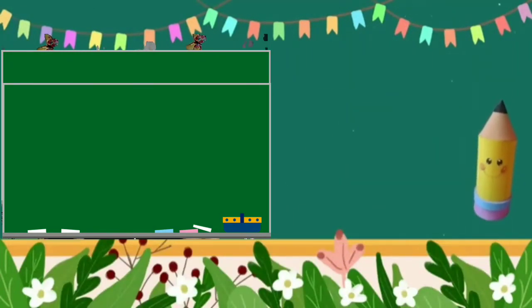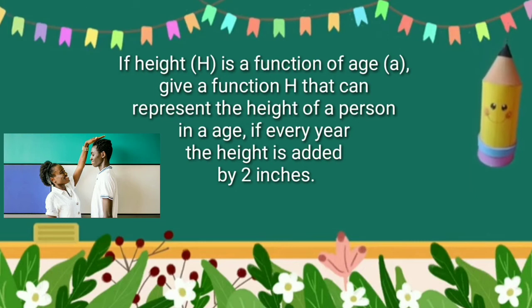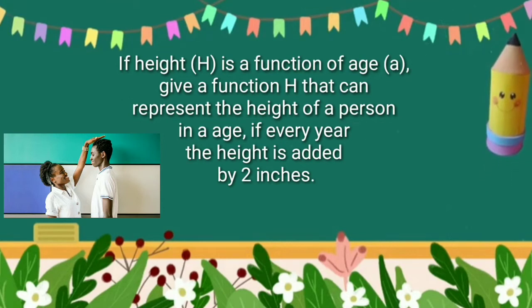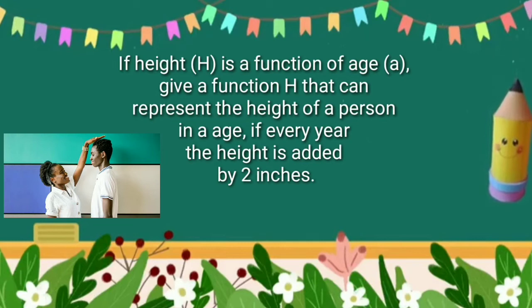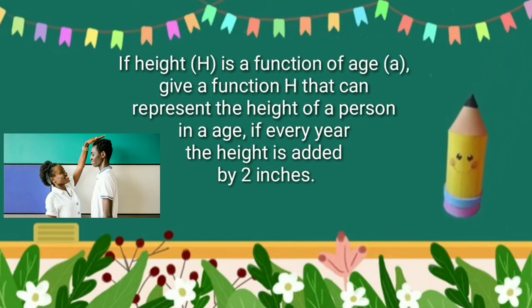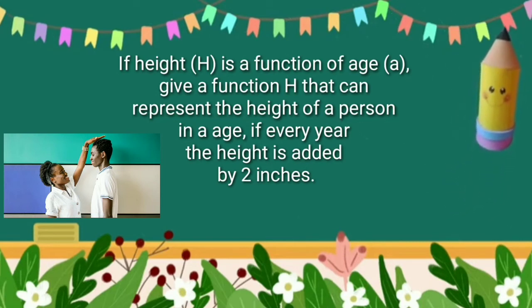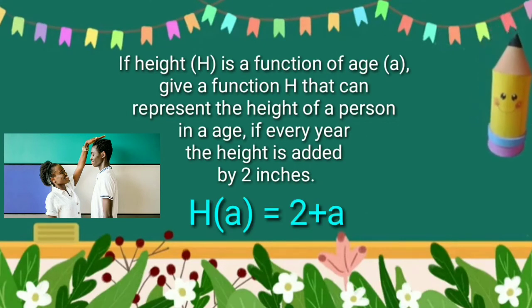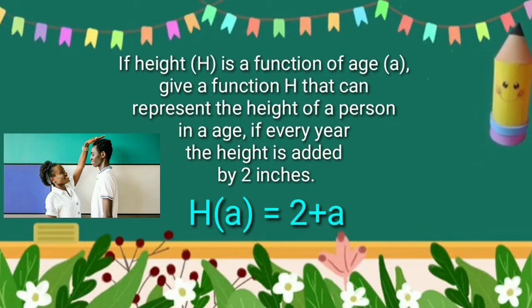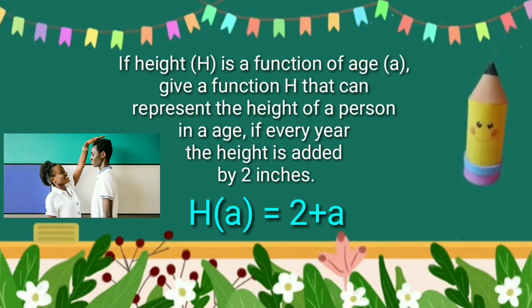Let's try the following real-life situation. If height h is a function of age a, give a function h that can represent the height of a person in age a, if every year the height is added by 2 inches. Solution: since every year the height is added by 2 inches, then the height function is h of a is equal to 2 plus a.